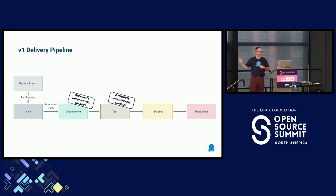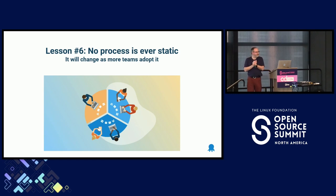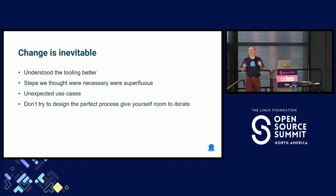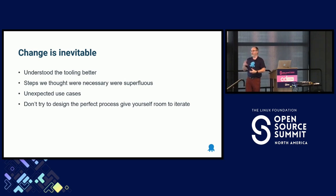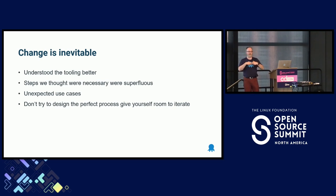I'll get into why being pigheaded is a bad thing. But one thing I learned was no process is ever static. As you learn the tooling better and understand it, you're also going to discover that certain rules can be interpreted in different ways. As long as you are following the core rules and everyone can agree to those core rules, you might say, I don't really need that step. So the lesson I'd encourage you to take away is: don't try to design the world's most perfect process from the get-go, because you're going to iterate on it anyway. Treat it like code — iterate, make improvements, make it better.